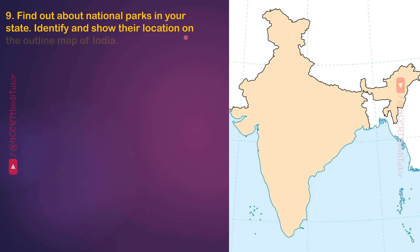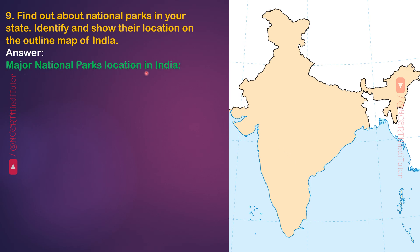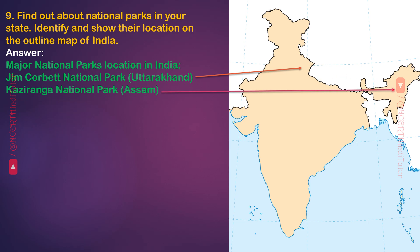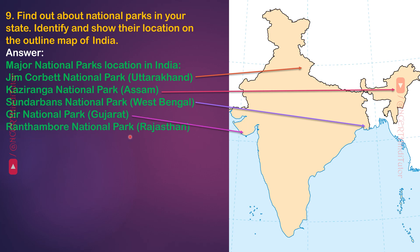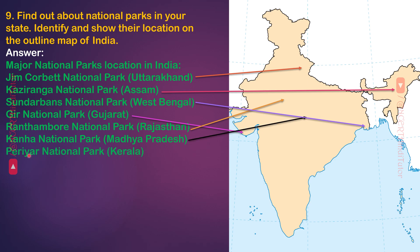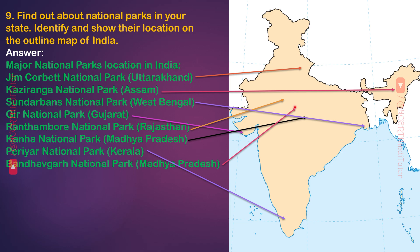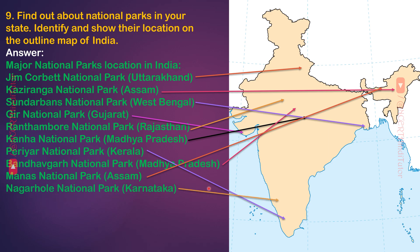You can choose national parks according to your state. The locations of these national parks on the outline map of India are: Jim Corbett National Park — Uttarakhand; Kaziranga National Park — Assam; Sundarbans National Park — West Bengal; Gir National Park — Gujarat; Ranthambore National Park — Rajasthan; Kanha National Park — Madhya Pradesh; Periyar National Park — Kerala; Bandhavgarh National Park — Madhya Pradesh; Manas National Park — Assam; Nagarhole National Park — Karnataka. These are the locations of the national parks on the outline map of India.